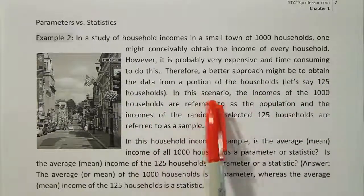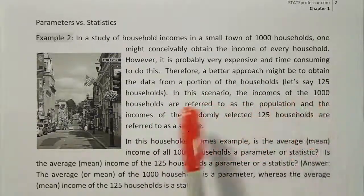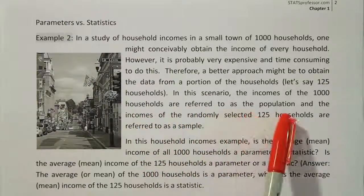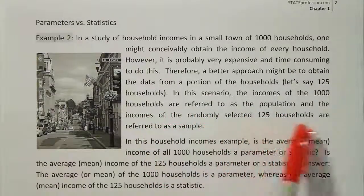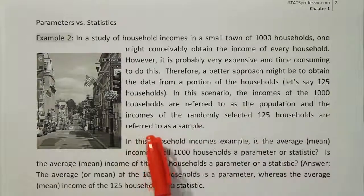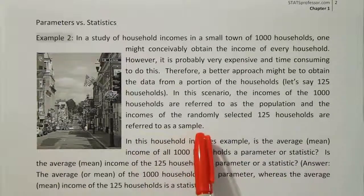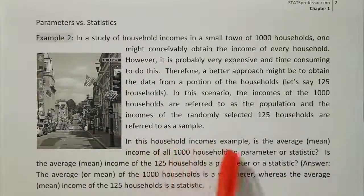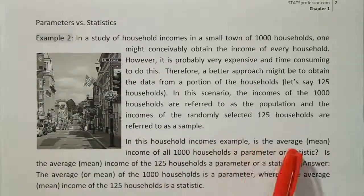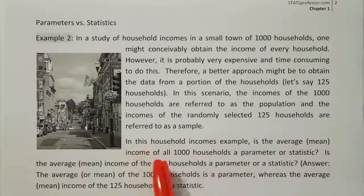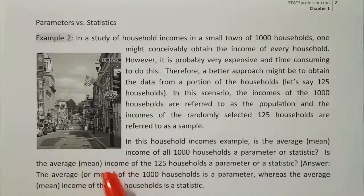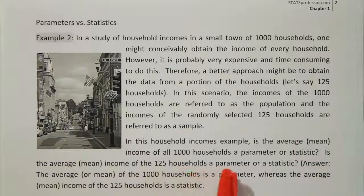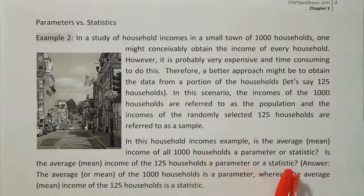In this scenario, the incomes of the 1,000 households are referred to as the population, and the incomes of the randomly selected 125 households are referred to as a sample. In this household incomes example, is the average income of the 1,000 households a parameter or statistic? Is the average income of the 125 households a parameter or statistic?